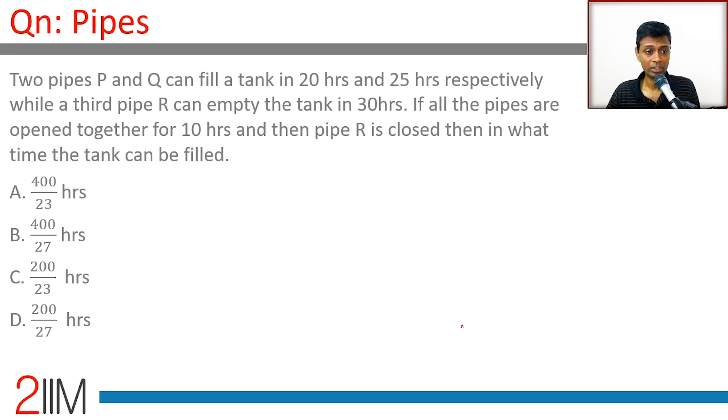Pipe P fills in 20, so in one hour it can do 1/20. Pipe Q fills in 25, so in one hour it can do 1/25. Pipe R empties in 30, so in one hour it can empty 1/30. This is minus because it empties. In one hour we'll do 1/20 + 1/25 - 1/30.